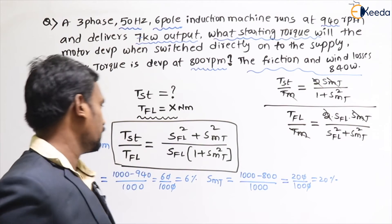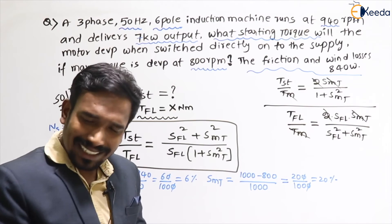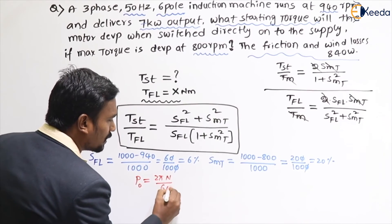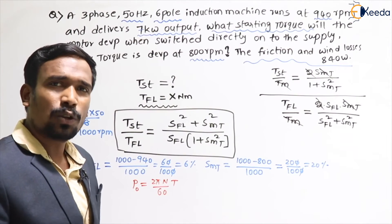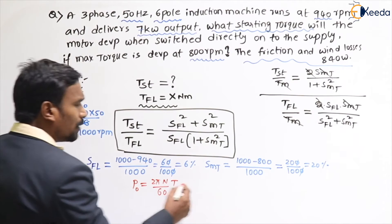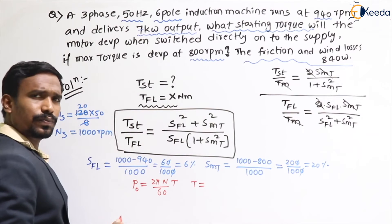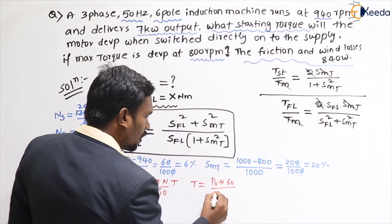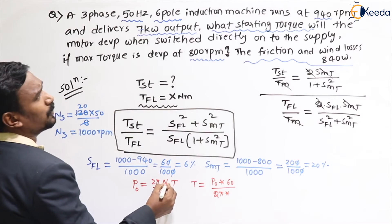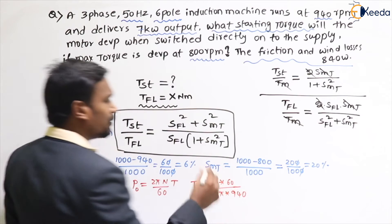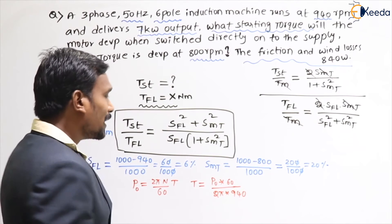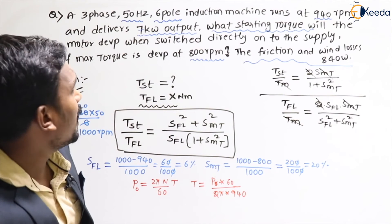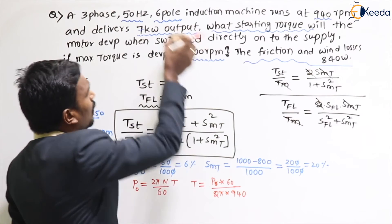Now find the full load torque. The formula is: P_output = 2πNT/60, so torque T = P_output × 60 / (2πN), where the rotor speed at full load is 940 rpm. We need to use the rotor output power, not the machine output directly.